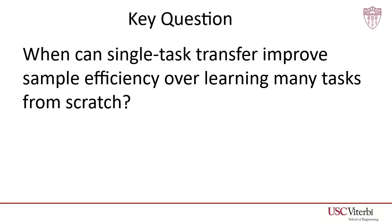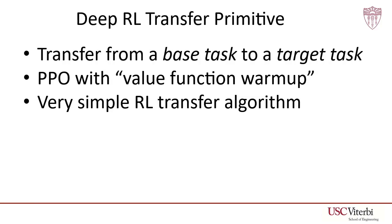In this work, we seek to answer the key question of when can single-task transfer improve sample efficiency over learning many tasks from scratch. We choose to limit ourselves to a DVRL transfer primitive that transfers a policy from a single base task to a single target task at a time.